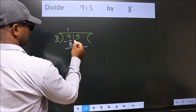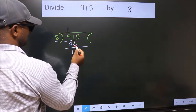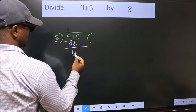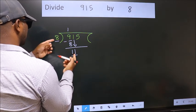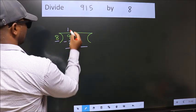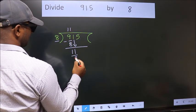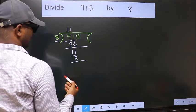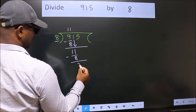After this, bring down the beside number. 1 down, so 11. A number close to 11 in the 8 table is 8 once 8. Now we subtract. We get 3.